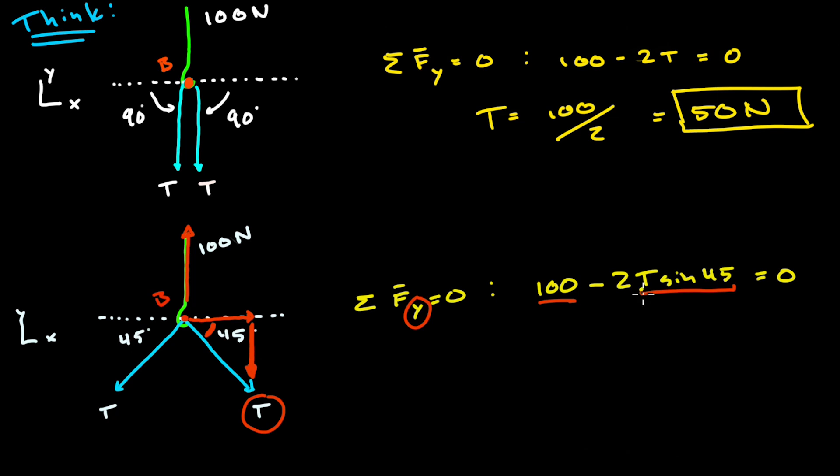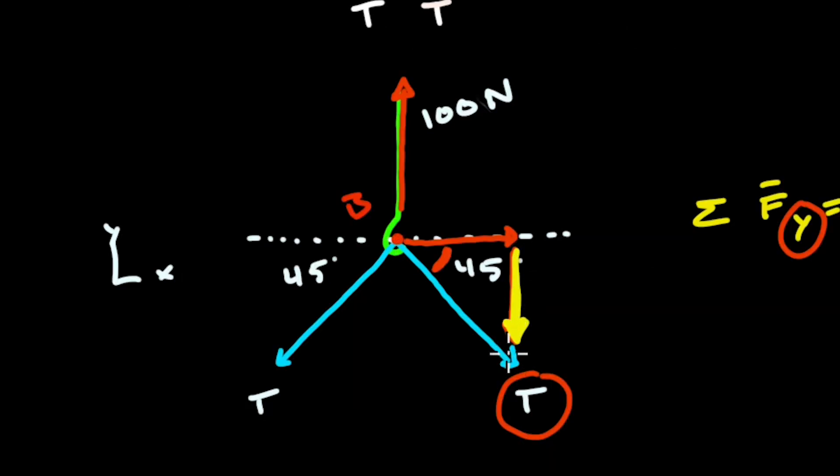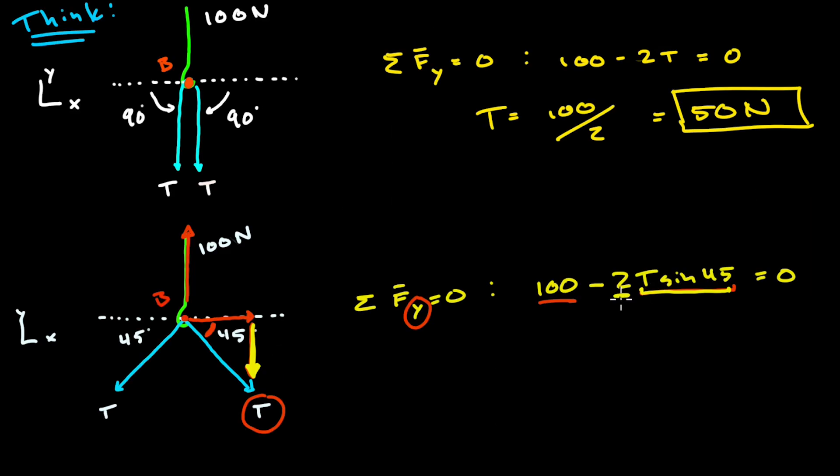So to be absolutely clear T sine 45 is actually this vertical component of the diagonal blue force. And there's two of them which is why we're subtracting two T sine 45. So this is all of the forces in the vertical direction. And again at this point you just have to solve for the unknown variable T.